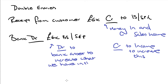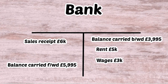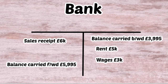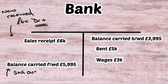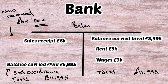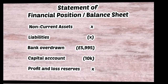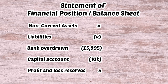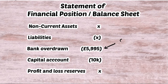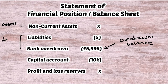Overall the balance carried forward is £5,995 overdrawn, because the £3,995 brought forward plus the £8,000 spent in the year still outweighs the £6,000 sales receipt. The total on the right is £11,995, and by introducing the balance carried forward of £5,995 both sides balance. On the statement of financial position: non-current assets at the top, liabilities including bank overdrawn of £5,995, then capital account of £10,000 and profit and loss reserves below.